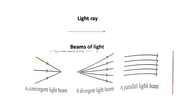To learn about reflection we need to know some scientific terms. A light ray is indicated by a straight line with an arrowhead. A beam of light is a collection or bundle of light rays. There are three types of light beams: parallel light beam, divergent light beam, and convergent light beam. A parallel light beam is a bundle of light rays where each ray is parallel to the others.